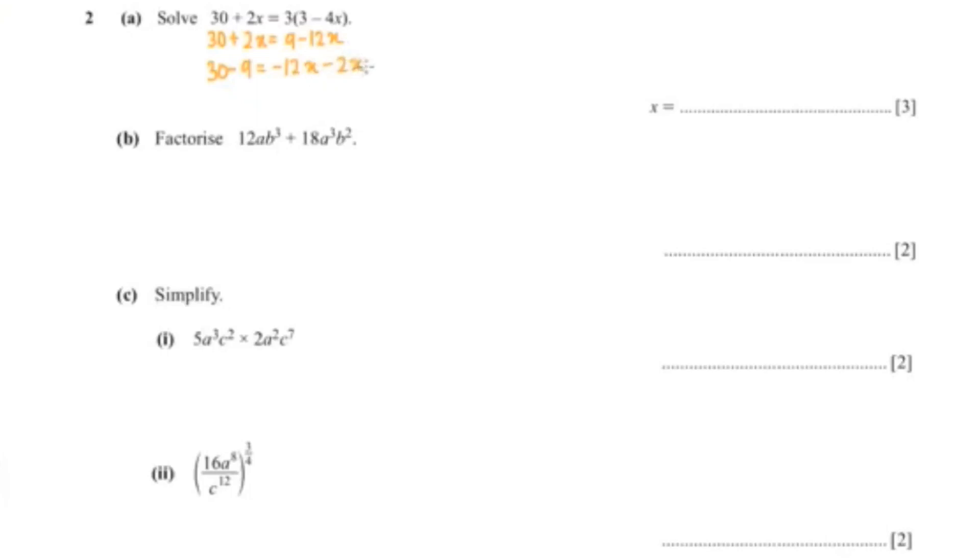So that's negative 12 minus 2x. That would give me 21 equals negative 14x. To calculate x, you would do 21 divided by negative 14, and that would be negative 3 over 2, which I'm going to write in decimal form as negative 1.5.